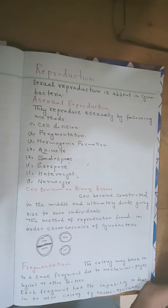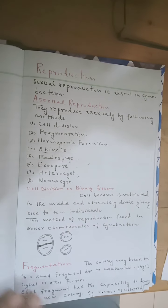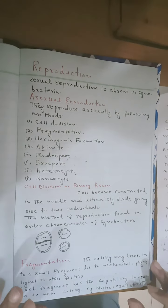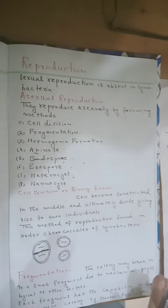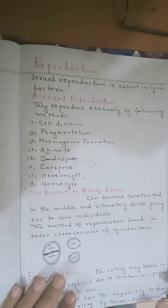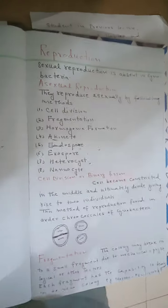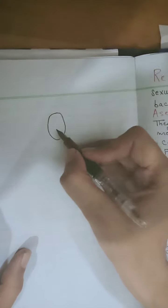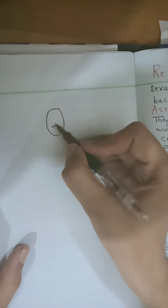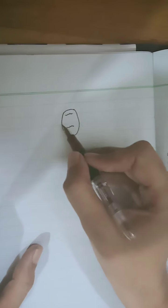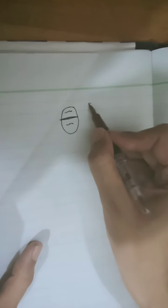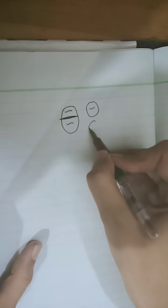Let's start with cell division or binary fission. Cell division is found only in unicellular cyanobacteria. In cell division, first of all the genetic material of the cell divides into two. It replicates into two and they move apart. After that, a constriction appears in the middle which divides the cell into two cells.